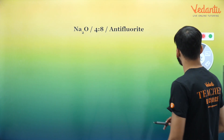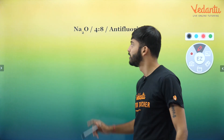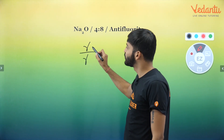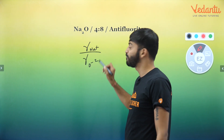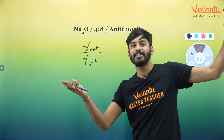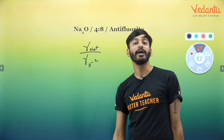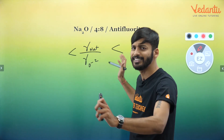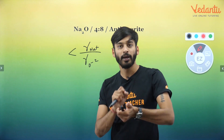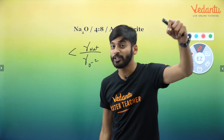Now I will give you a little homework on anti-fluorite. What is the difference in anti-fluorite? Here the cation is small and the anion is big. In fluorite, Ca²⁺ was bigger and forming the FCC lattice. In anti-fluorite, O²⁻ is forming the FCC lattice and Na⁺ is occupying the tetrahedral void. Just the opposite — hence the name anti-fluorite. Drop your answers in the comment section.